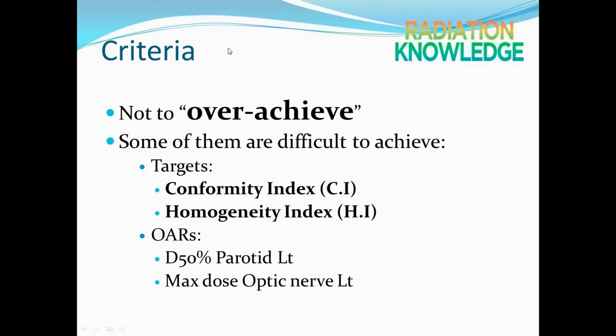An important point for the criteria is not to overachieve it. When you try to fulfill one criterion, you sometimes need to sacrifice another. If you have a criterion you can achieve, that's fine — don't overachieve it. Some criteria are very difficult to achieve, for example the target conformity index (CI) and homogeneity index (HI). I'll give tips for those in later slides. Many people also think the parotid D50% is very difficult to achieve, and I'll address that as well.